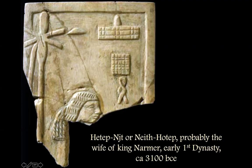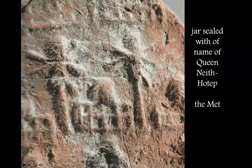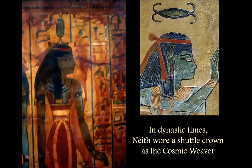Neith is pleased. Neith is satisfied. This is a very early queen, and her tomb had jars sealed with this distaff-crossed-with-arrows emblem. There are two of them. Nehthotep — this spells out her name — so this is an impression seal to close off the jar with the offerings left for her. Here we get some other images of her from various pieces of art in dynastic times, wearing the shuttle.